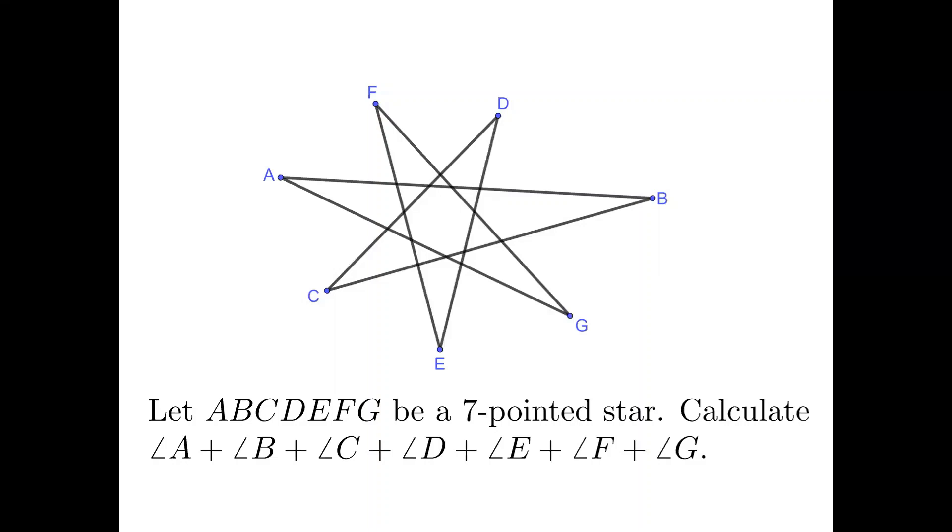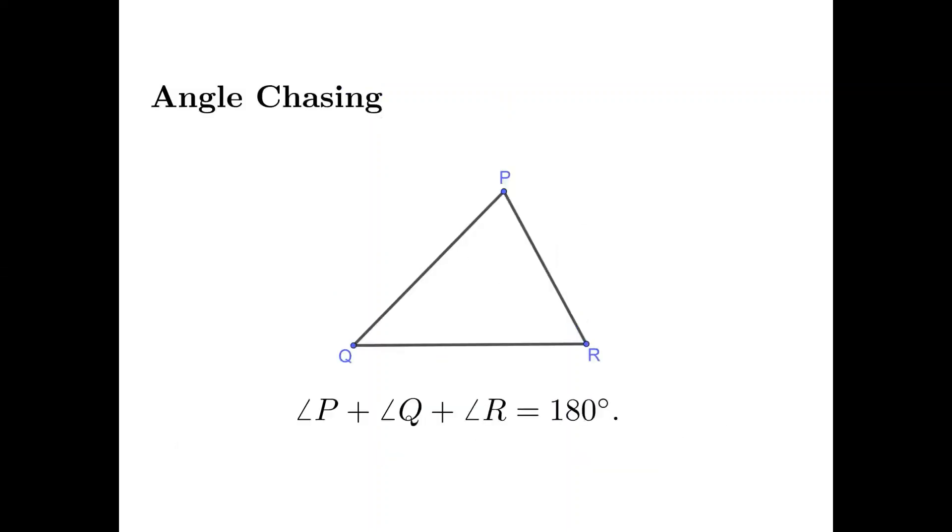Consider a seven-pointed star ABCDEFG. We will show that the sum of the seven angles equals 180 degrees. I'm going to perform an angle chasing.